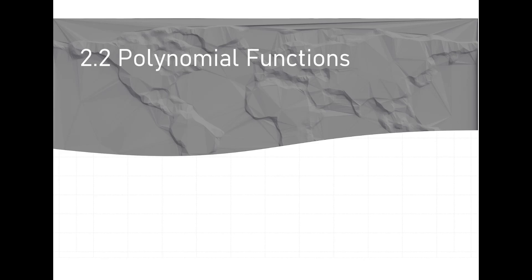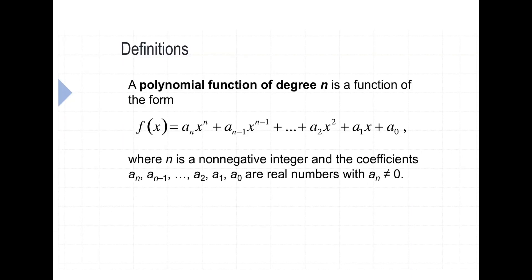In this section, we're going to look at polynomial functions. A quadratic function, which we looked at in 2.1, is also a polynomial, but we're going to expand out a little bit more and look at a more general approach, not just limited to quadratic functions — functions of different powers. When we talk about polynomials, it's kind of one of those things that's easier to see than it is to define, but we'll try to put a definition on a polynomial.